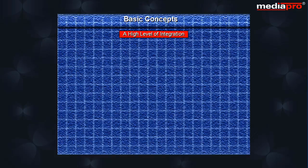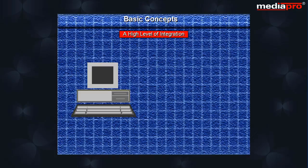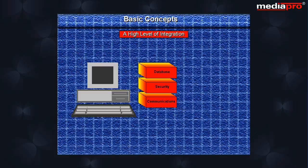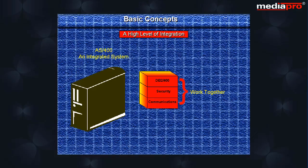A high level of integration: Perhaps the most important feature of the AS400 is that it is a totally integrated system. On most computer systems, the various components such as the database, security, and communications are different components developed separately and configured to work together. The AS400, on the other hand, has a totally integrated system which includes all the various components such as the database, security, communications, etc. The advantage is that all the components have been optimized to work together, and the customer does not have to be concerned with the intricacies involved in making them work together.